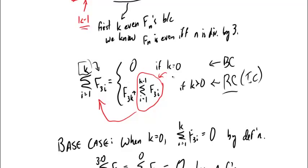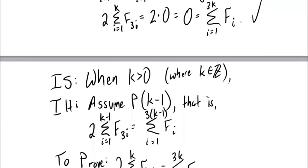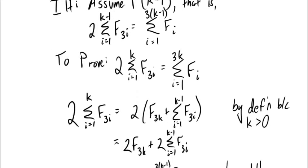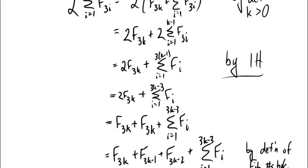We can write QED, because we've finished all the cases structural induction required: one base case and one recursive case. Unlike many induction proofs, there's real insight here. The key step was recognizing that two copies of F sub 3k can be split into F sub 3k, F sub 3k minus 1, and F sub 3k minus 2 using the Fibonacci definition — and that's actually the reason why twice the even Fibonacci numbers equals the sum of all Fibonacci numbers up to that point.